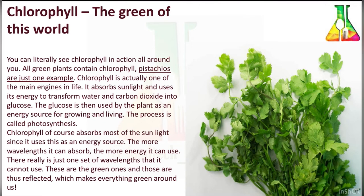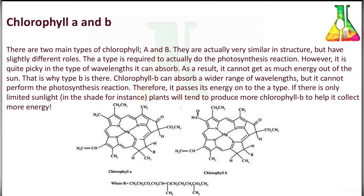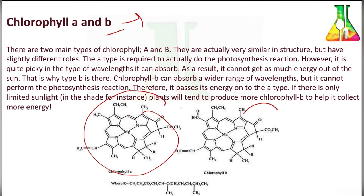There is always some deterioration of chlorophyll on storage, whatever the processing method. Chlorophyll absorbs most of the sunlight and uses it as an energy source; the more wavelengths it can absorb, the more energy it can use. Chlorophyll is classified into two types: chlorophyll a and chlorophyll b. Chlorophyll a absorbs sunlight and transforms water and CO2 into glucose, whereas chlorophyll b can absorb a wider range of wavelengths but cannot perform photosynthesis. Chlorophyll b is more soluble than chlorophyll a because of its carbonyl group.